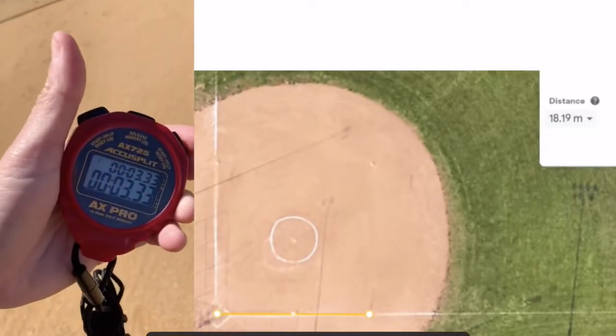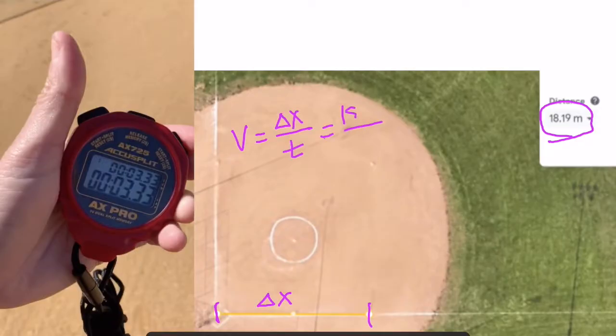And we see it took her 3.33 seconds. We know the distance from Google Earth from home plate to first base as 18.19 meters. Since she's going to the right, we can call that displacement a positive number. So when we're trying to find her velocity, we would use the displacement over time, which is 18.19 meters over 3.33 seconds.